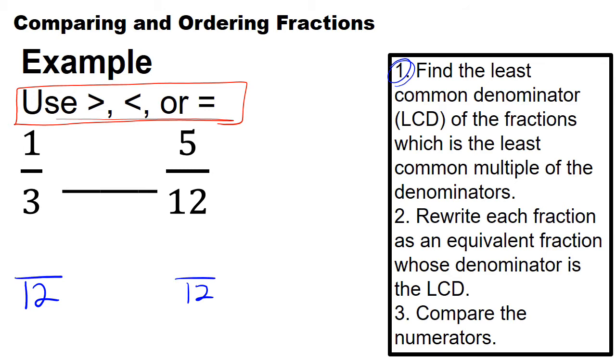Go ahead and compare these. So five-twelfths will stay the same, but to go from one-third to have a denominator of 12, we need to multiply our numerator and our denominator by 4. So 3 times 4 gives us 12 as our denominator. So 1 times 4 gives us 4.